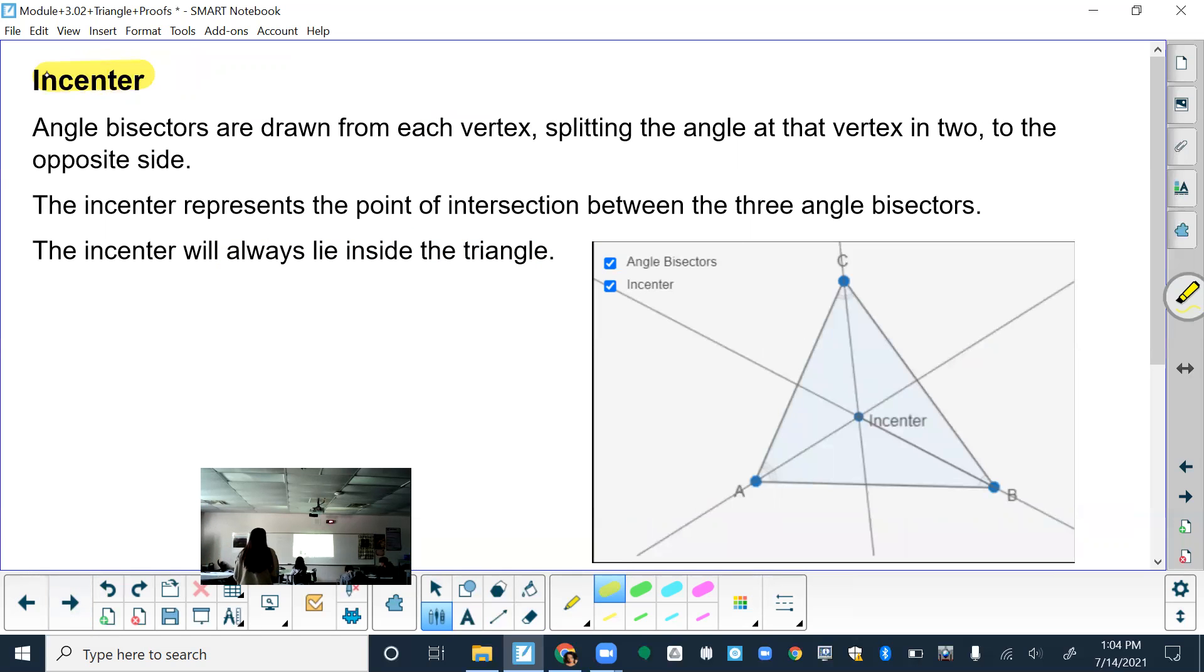Then we have incenter. Here's how to draw them, an example. It represents the point of intersection between three angle bisectors. And the incenter will always lie inside.